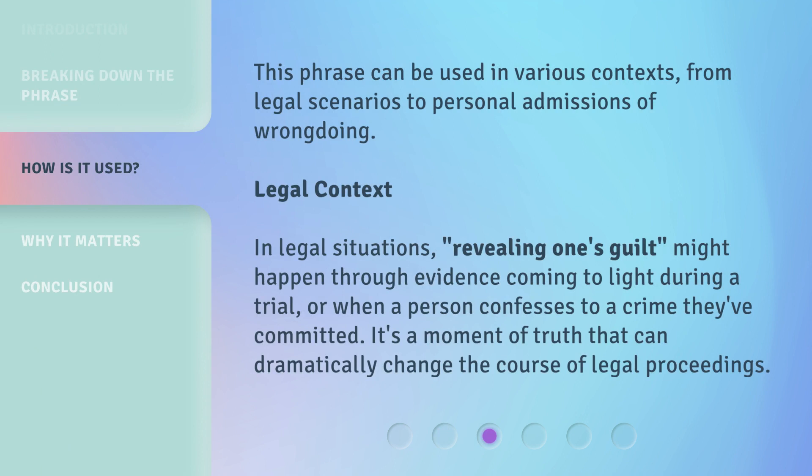Legal Context: In legal situations, revealing one's guilt might happen through evidence coming to light during a trial, or when a person confesses to a crime they've committed. It's a moment of truth that can dramatically change the course of legal proceedings.